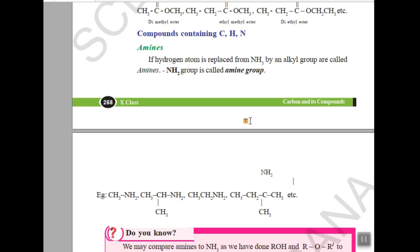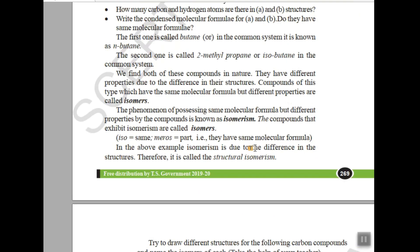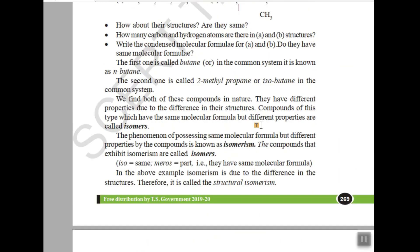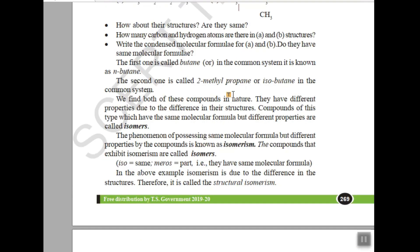We also have amines, involving nitrogen. After that we have a topic on isomerism. Isomerism is when two carbon hydrocarbons belong to the same molecular family but have different shapes. For example, two structures can each have four carbons and ten hydrogens, but their shapes are different — so they are known as isomers.